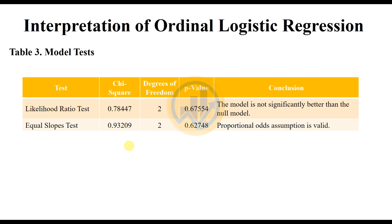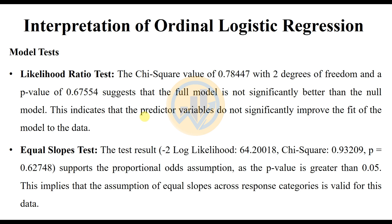The third table presents the model test, including the likelihood ratio test and the equal slope test, with parameters for chi-square value, degrees of freedom, and p-value. The conclusion is that the model is not statistically better than the null model. The likelihood ratio test chi-square value of 0.78, with 2 degrees of freedom and a p-value of 0.67, suggests that the full model is not statistically better than the null model, indicating that the predictor variables do not statistically improve the fit of the model to the data.